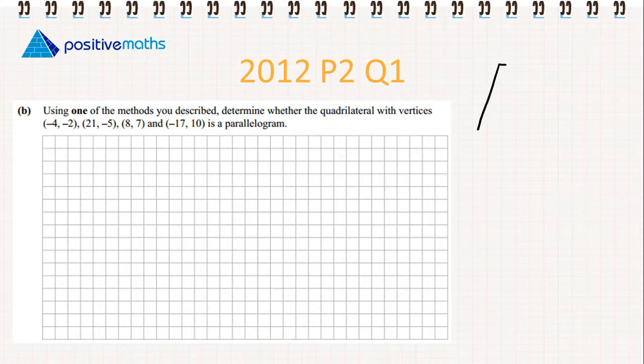We'll draw a rough sketch. We should be able to notice that the point (-4, -2) is on the bottom left corner. Then we have (21, -5), (8, 7), and (-17, 10). I'm going to label these A, B, C, and D.